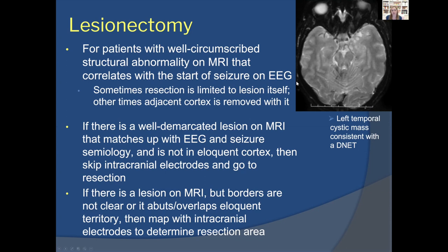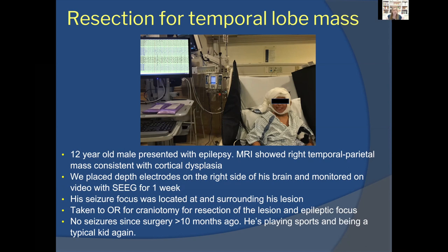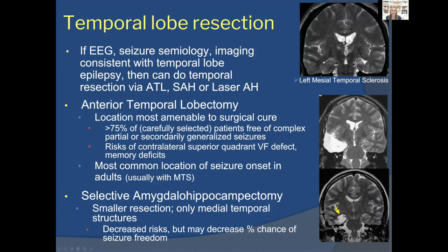If a lesion's borders are unclear or it abuts eloquent territory, intracranial electrodes are placed first. For example, a 12-year-old male with epilepsy and a right temporal-parietal dysplasia on MRI had scalp EEG suggesting a broader seizure zone than just the visible lesion. Depth electrodes were placed on the right side, and after a week of monitoring in the ICU, the seizure focus was confirmed to involve both the MRI abnormality and surrounding tissue. He underwent lesionectomy and epileptic focus resection and was seizure-free for more than 10 months post-operatively.